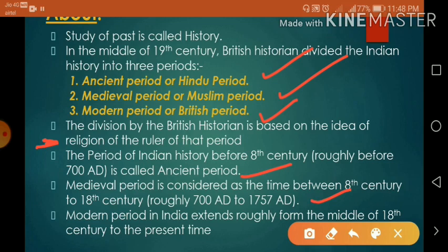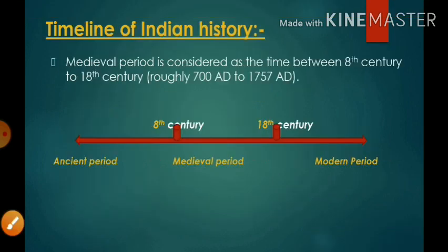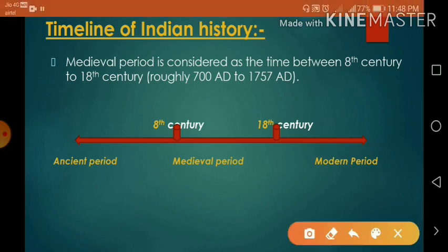The ancient period is a time before the 8th century. The medieval period is a time between the 8th century to the 18th century. And the modern period is a time after the 18th century.